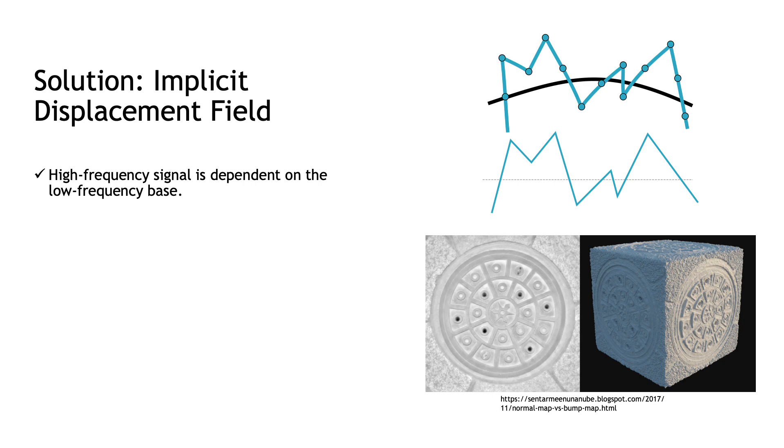Our solution is inspired by the classic shape deformation technique, displacement mapping, which creates detailed surface from a smooth one by displacing sample points along the normal directions. Obviously though, this definition is discrete and is defined only on the surface.